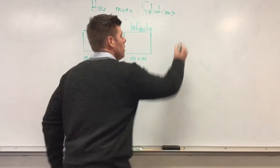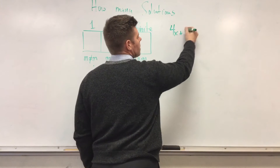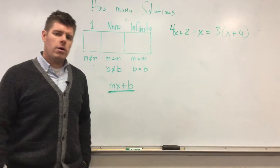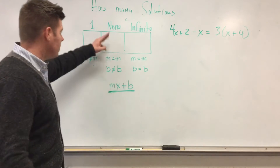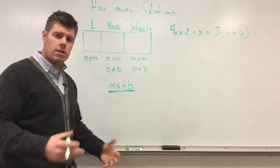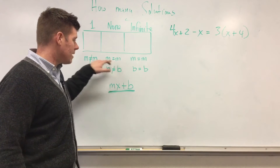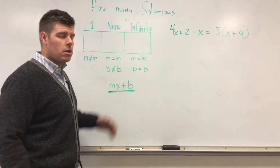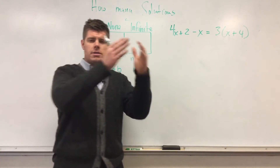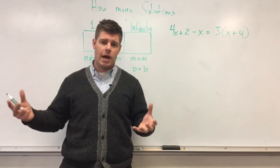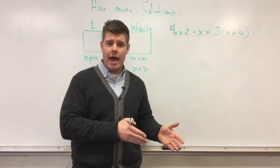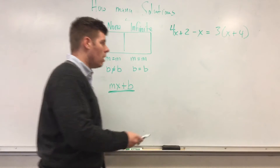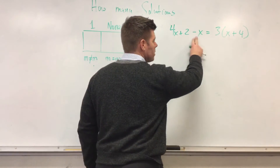Next example: 4x + 2 - x = 3(x + 4). Now we look at the possibility of no solution. In a no-solution case, the number of X's on both sides is the same, but the constants being added or subtracted are different. For instance, if one side has five X's and the other also has five X's, but one is adding three and the other is not, then there is always going to be no solution.